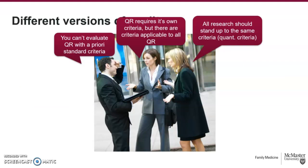There are kind of three camps of visions of quality for qualitative research. Some people think it's absolutely impossible to evaluate qualitative research with standardized criteria created outside of the particular research topic. Some people think that all research should stand up to the same criteria — the criteria used for quantitative research. And then there's a big mucky middle that says qualitative research can be evaluated by a priori standardized criteria, but it requires its own criteria — criteria applicable to all qualitative research. This middle camp holds a variety of different stances and is certainly not a unified or monolithic group.